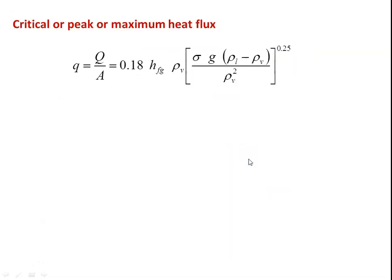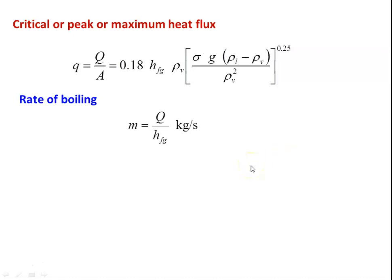The critical heat flux at point C is: q/A = 0.18 · h_fg · ρ_V · [σ · g · (ρ_L − ρ_V) / ρ_V²]^0.25. The rate of boiling — the mass of liquid converted into vapour — is: ṁ = Q / h_fg, where Q is the total heat transfer (heat flux × area) and h_fg is the latent heat of evaporation.